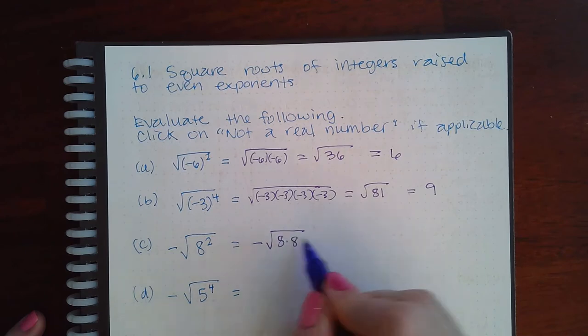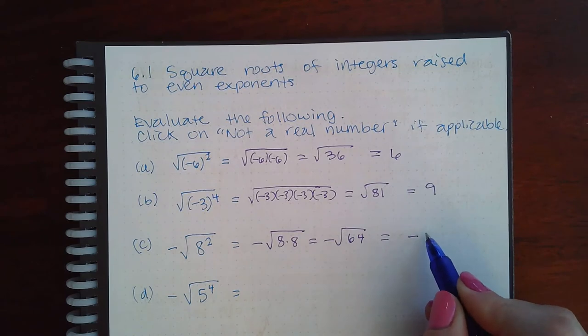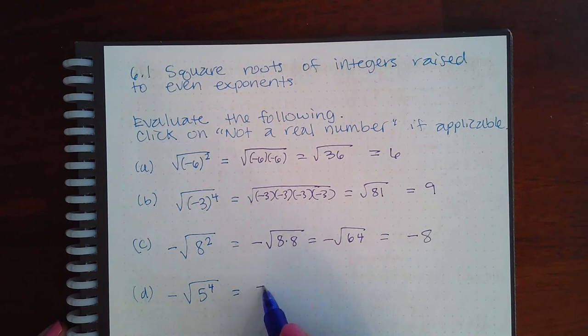Now here, 8 times 8 is going to be 64, and the square root of 64 is 8.